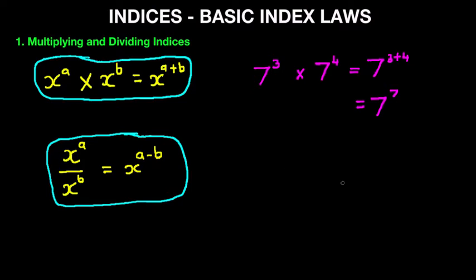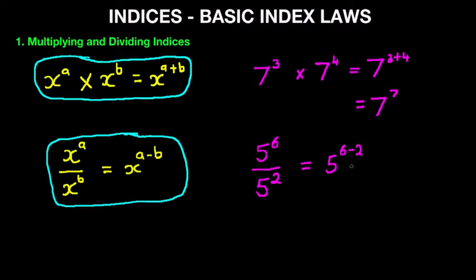Let's work through a simple example. Suppose we have 5 to the power of 6 divided by 5 to the power of 2. This becomes 5 to the power of 6 minus 2, and that equals 5 to the power of 4. And that is how we multiply and divide indices.